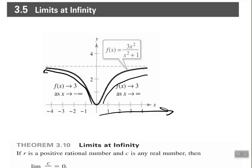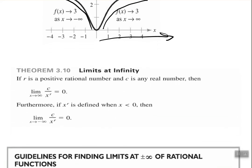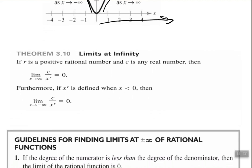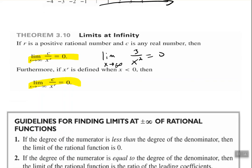In this video, we're going to deal with horizontal asymptotes basically. You may remember some of your rules from horizontal asymptotes, but if not, we'll go over them. So if r is a positive rational number and c is any real number, then the limit of c over x to the r power as x approaches infinity is equal to 0. Furthermore, if x to the r is defined when x is less than 0, then the limit of c over x to the r power as x approaches negative infinity is also 0. For example, the limit as x approaches infinity of 3 over x squared is 0. Same thing as it approaches negative infinity.